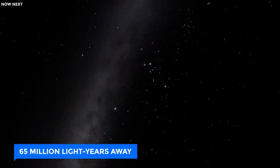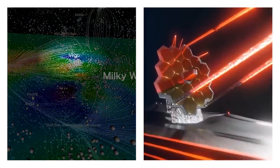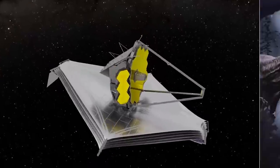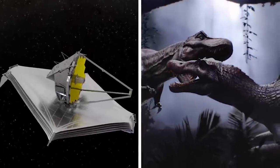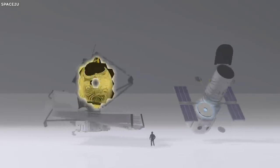Imagine being 65 million light-years away in the Virgo Cluster with a super-strong telescope aimed at Earth. Through this telescope, you would spot dinosaurs on our planet. The James Webb Space Telescope, even mightier than the Hubble, makes this possible.